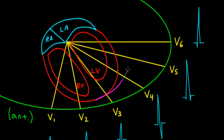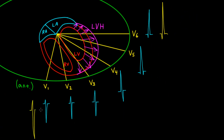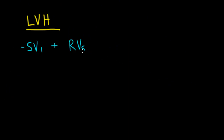Let's start with LVH. With left ventricular hypertrophy, the force of depolarization is greater in the area of the left ventricle. As a consequence, the QRS complex is more positive in leads V5 and V6, which are closer to the left ventricle, and more negative in lead V1. In other words, with LVH, the R waves in V5 and V6 are taller, and the S waves in V1 are deeper. To diagnose LVH, look to see if the depth of the S wave in lead V1 plus the height of the R wave in lead V5 or V6 exceeds 35 millimeters. This is the most commonly used criterion for LVH, known as the Sokolow-Lyon criterion.